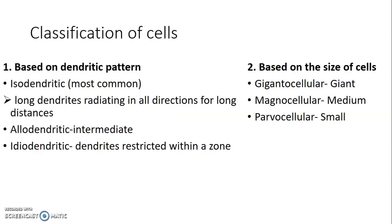There are different cells within the reticular formation that can be classified based on dendritic patterns. Isodendritic cells are the commonest and have long dendrites that radiate in all directions and for long distances. Allodendritic cells have intermediate size or length of dendrites, while idiodendritic cells have dendrites restricted within a zone.